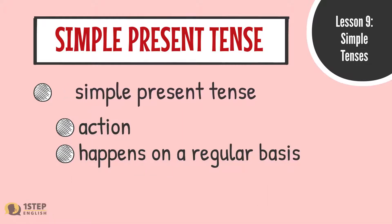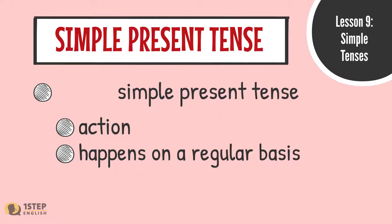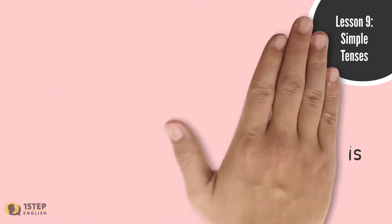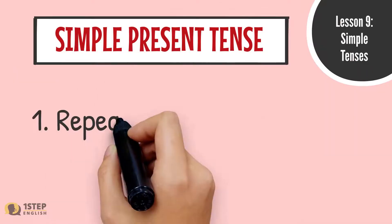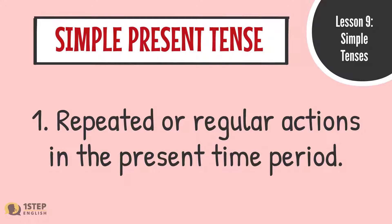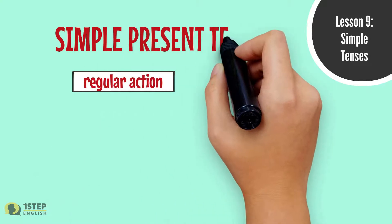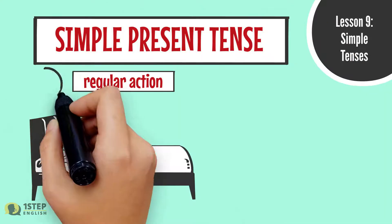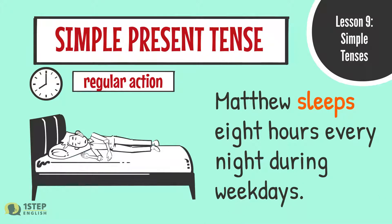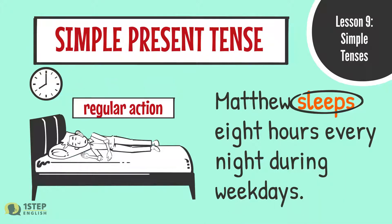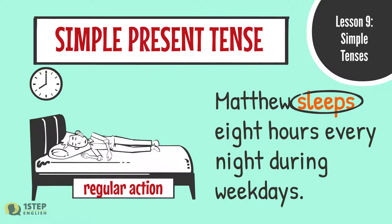The simple present tense is used to talk about an action that happens on a regular basis. We use the simple present tense for: 1. Repeated or regular actions in the present time period. For example, 'Matthew sleeps eight hours every night during weekdays.' The verb 'sleeps' is in the simple present tense.